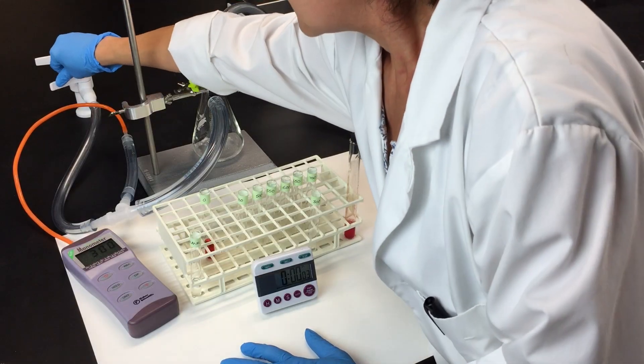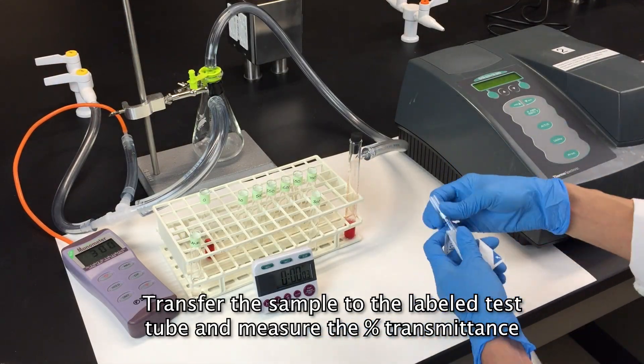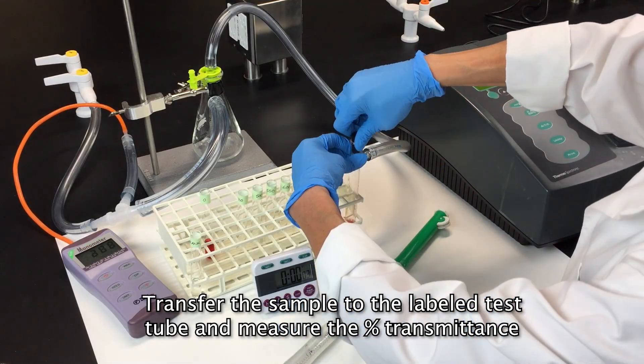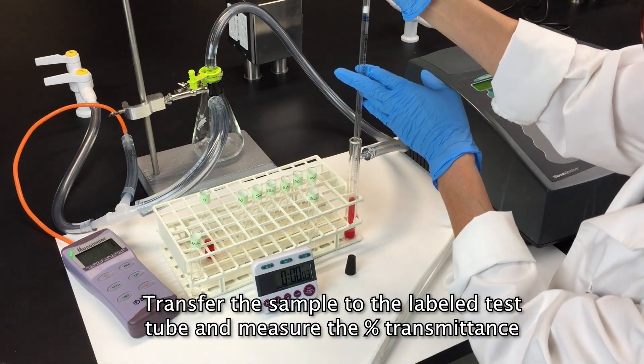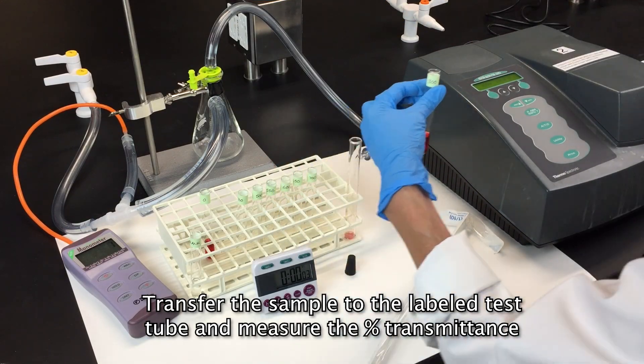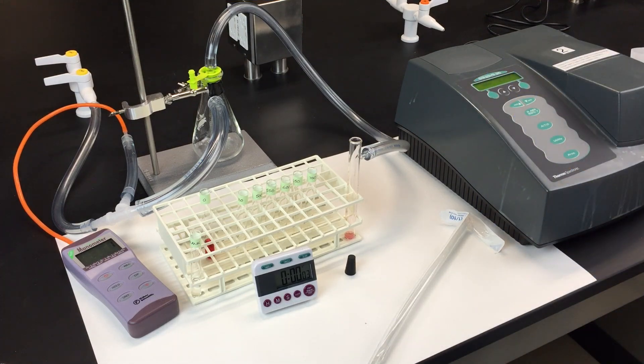Turn off the vacuum and transfer the hemolysate to the 300 millimeter mercury tube. Wipe off your tube and place it in the spectrophotometer and take your reading.